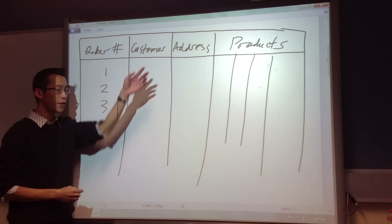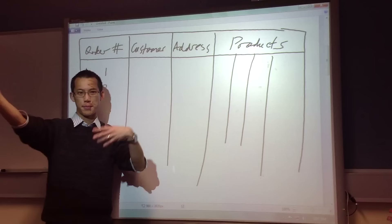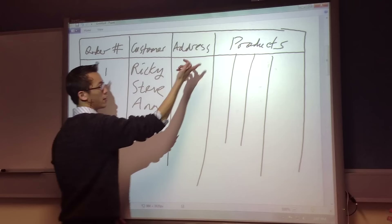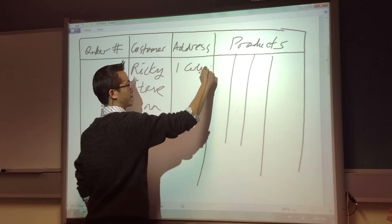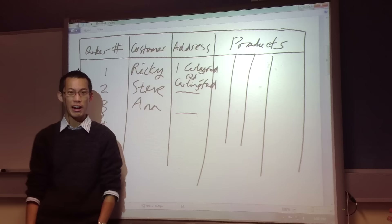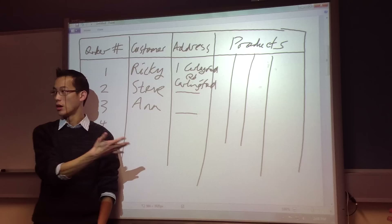As my business starts off, I'm getting different people at random. Ricky orders something, Steve orders something, Ann orders something, and I know their addresses — number one Carlingford Road, Carlingford, and so on. This is all fine so far. But the problem is when the same people start coming back and giving me repeat business over and over again.